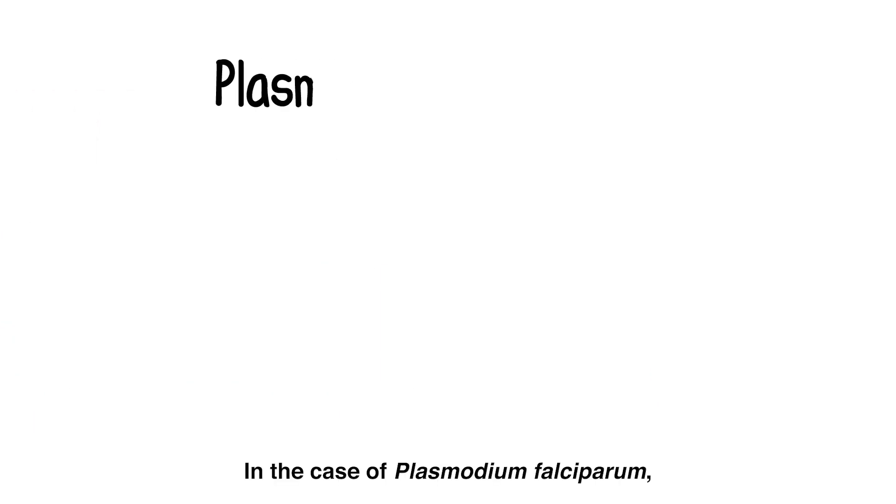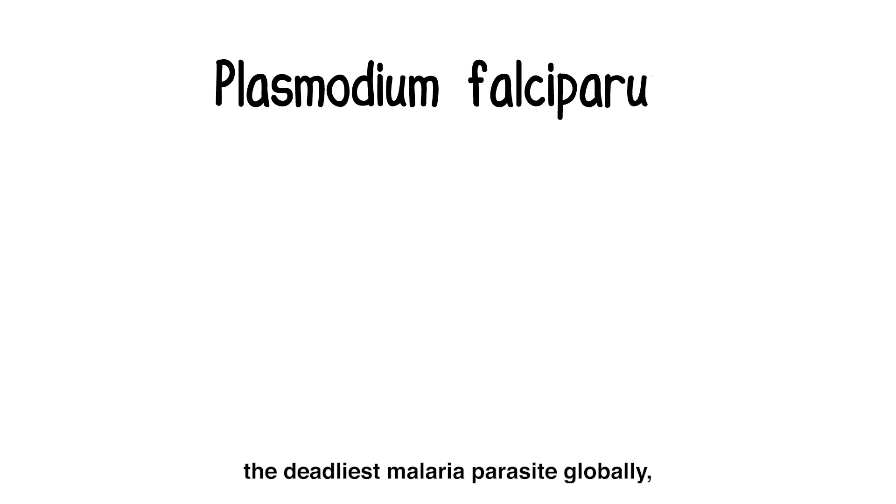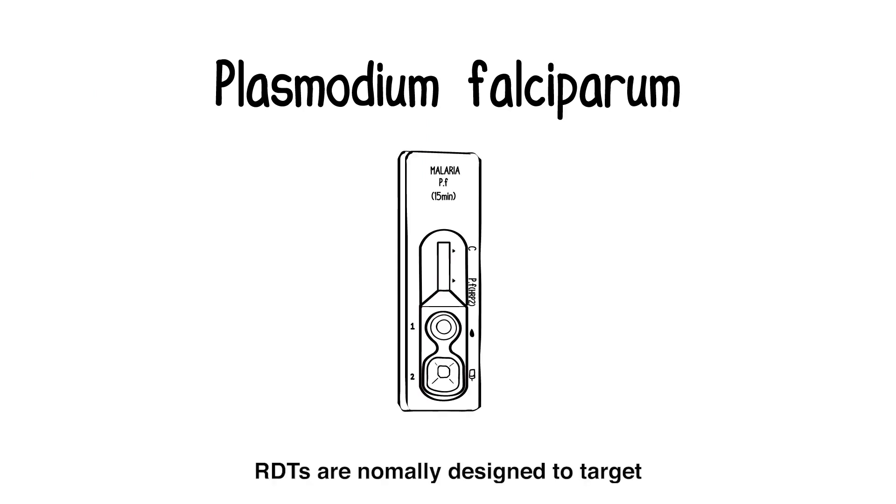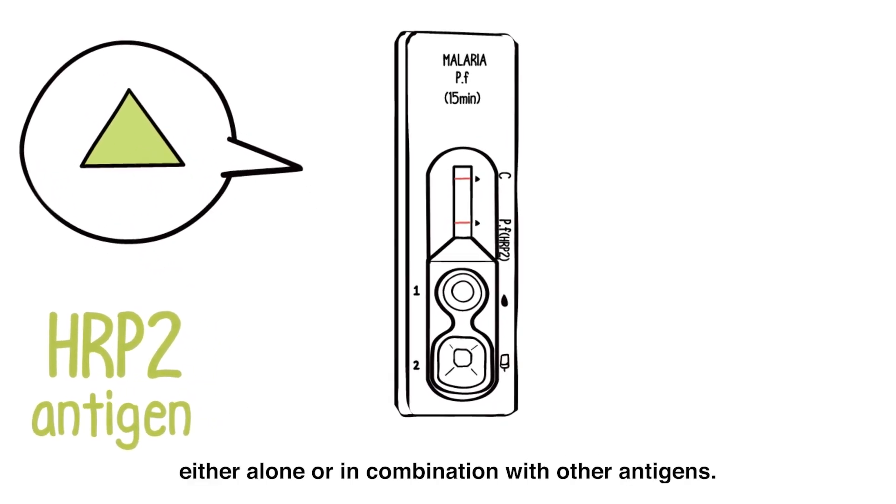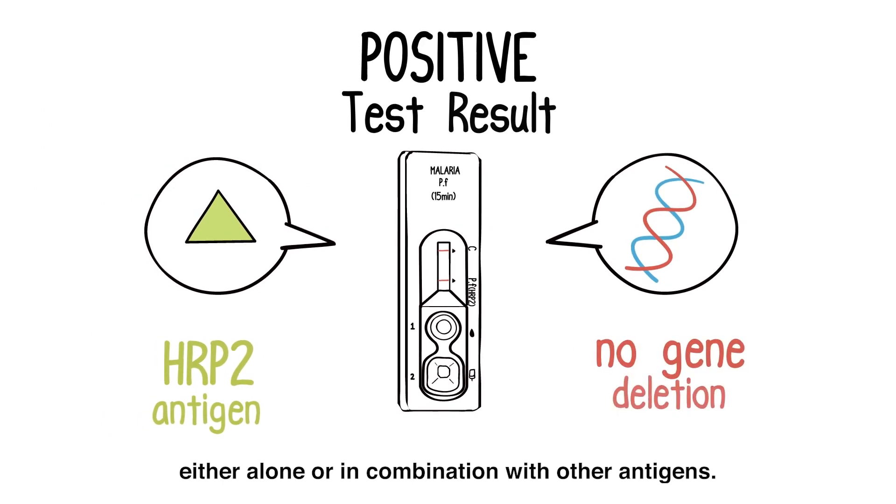In the case of Plasmodium falciparum, the deadliest malaria parasite globally, RDTs are normally designed to target an antigen called histidine-rich protein 2, or HRP2, in a patient's blood, either alone or in combination with other antigens.